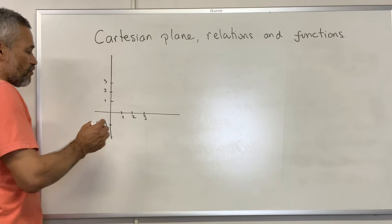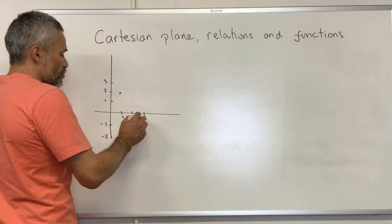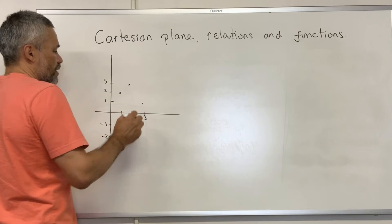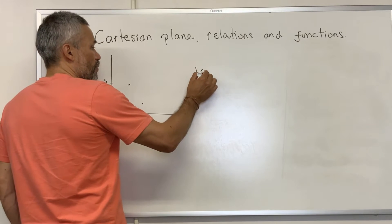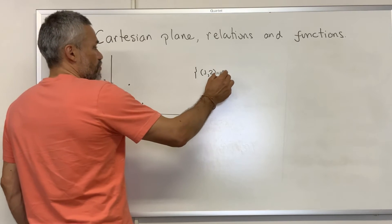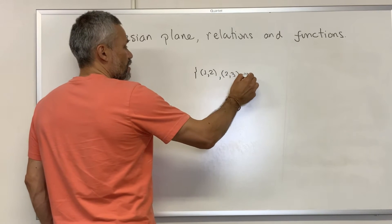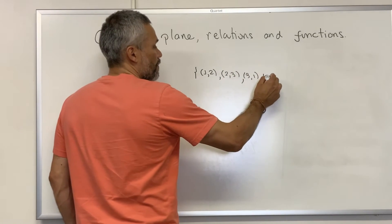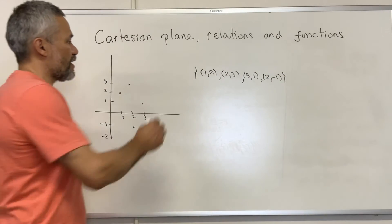Notice that if we have a collection of points — let's say (1, 2), (2, 1), (3, 1), and (2, 3) — this is a collection of points. Let me write them down: (1, 2), (2, 3), (3, 1), and (2, negative 1). This collection of points defines a relation.